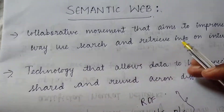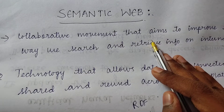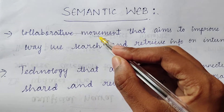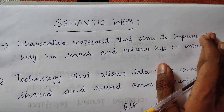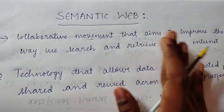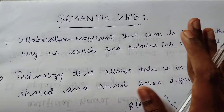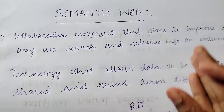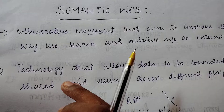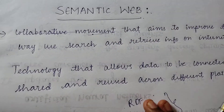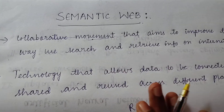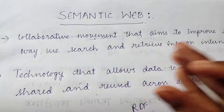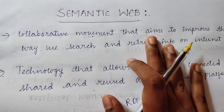Now let's come back to the definition of what it is exactly. Semantic web refers to a collaborative movement which aims to improve the way we search and retrieve information on the internet. Basically, it is a technology which allows data to be connected, shared, and reused across different platforms. In other words, it makes the web smarter by giving data meaning and context.